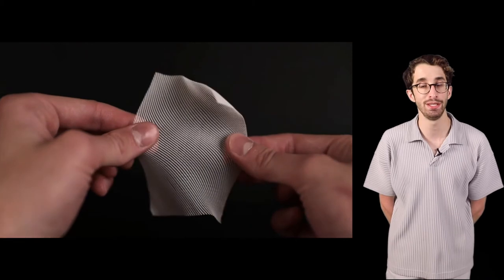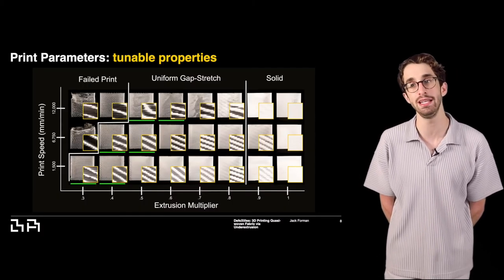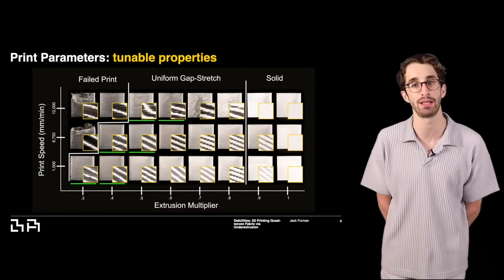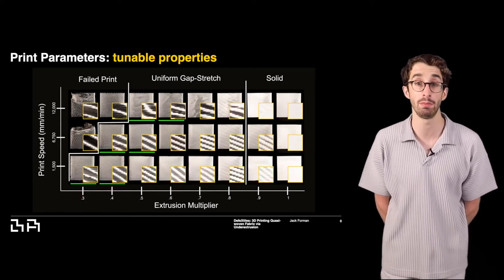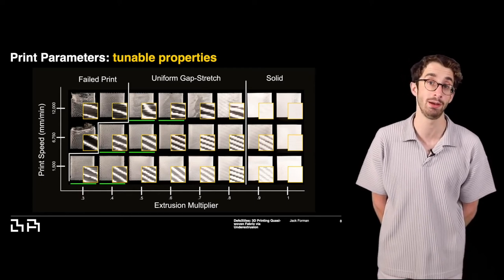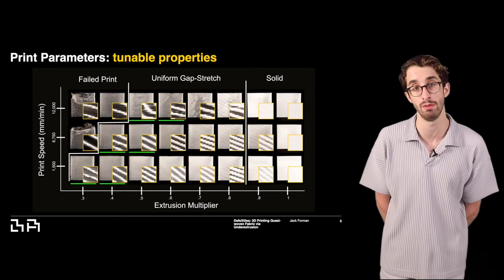Changing print speeds and extrusion multipliers allows us to control the density, flexibility, and stretchability of our textiles. The textiles can also be printed at very high speeds, up to 12,000 millimeters per minute, which was the maximum of our printer.